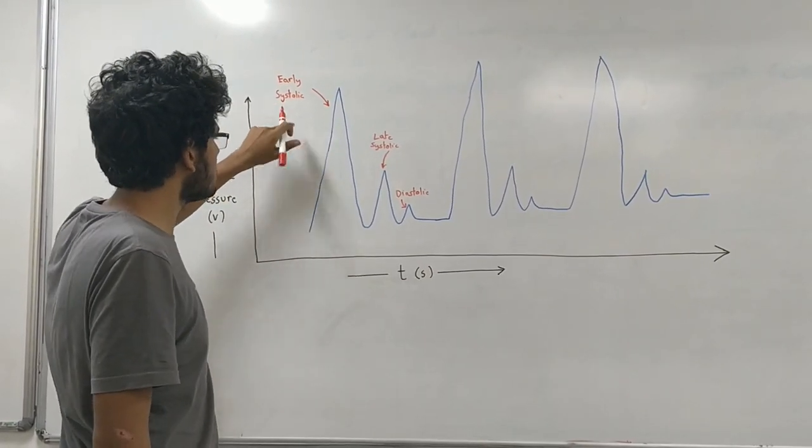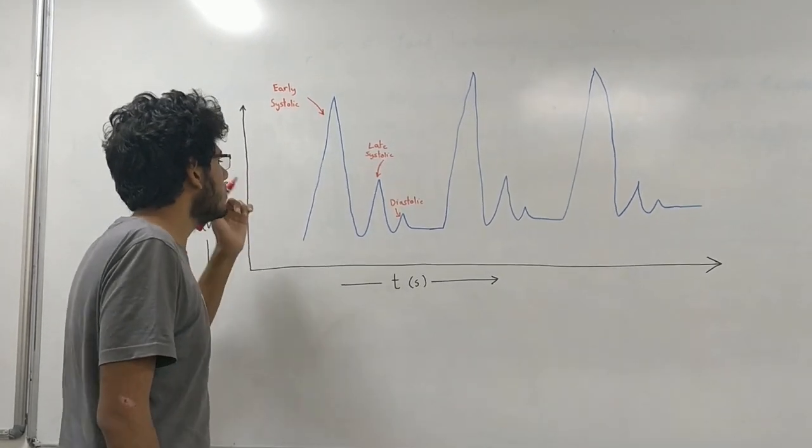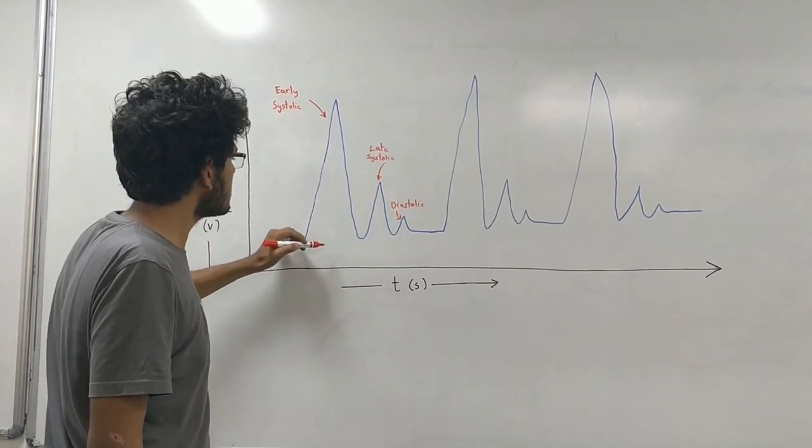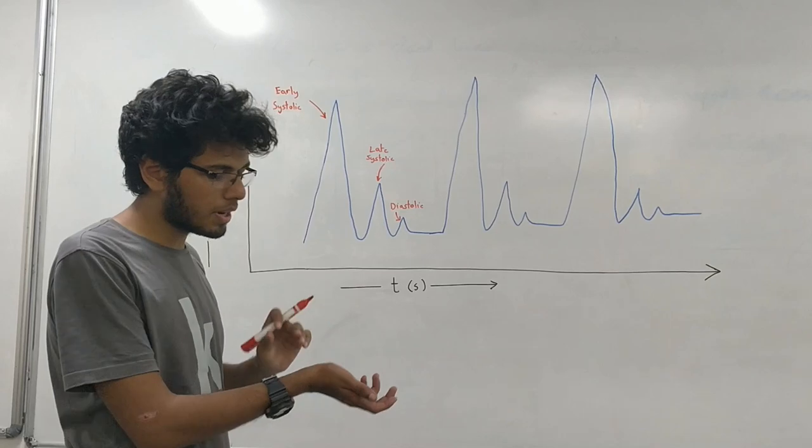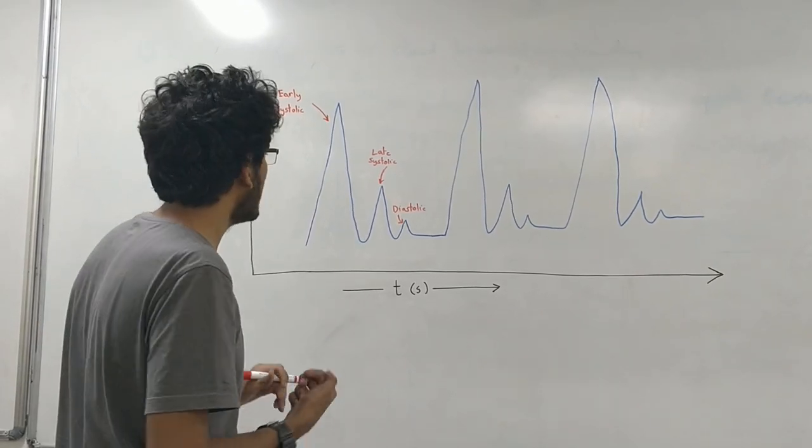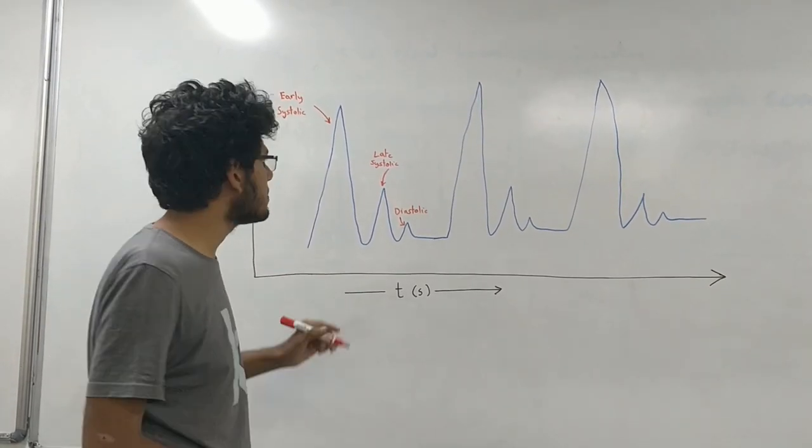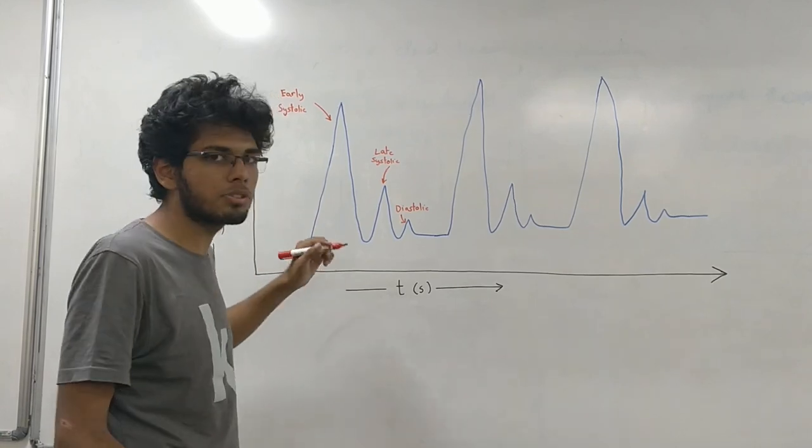We use the early systolic pulse to measure the beats per minute. Now, the maximas and minimas of this pulse cannot be used because the blood vessels have varying pressure. And also, if the sensor shifts slightly, the maximas and minimas can shift which can give us skewed readings.